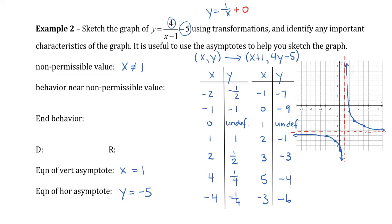Now let's take a look at what's happening with our features of our rational graph. The behavior near the non-permissible value is asking what's happening to the y values as x gets closer to 1. We can see that as x gets closer to 1, we get very large positive y values and very large negative y values. So as x approaches 1, the absolute value of y becomes very large.